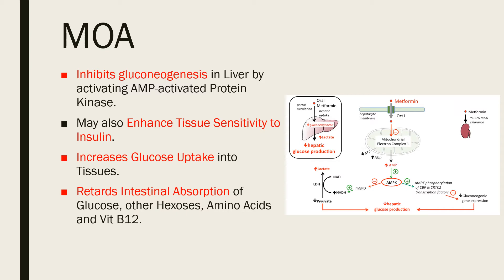This translates into glycogen storage in the skeletal muscles, reduced lipogenesis in adipose tissue, and enhanced fatty acid oxidation. Metformin also retards the intestinal absorption of glucose, other hexoses, amino acids, and vitamin B12.